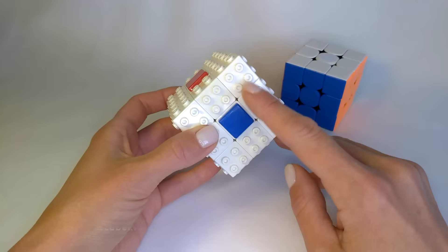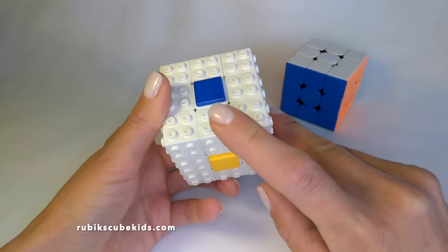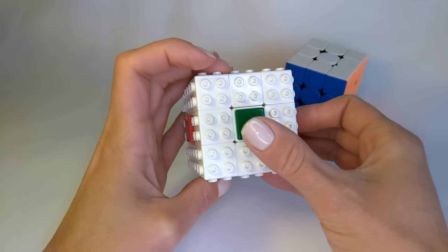The color of the center tells you what color the entire side should be. For example, when the cube is solved, the white side will be here because this side has a white center. It will be a yellow side, blue, red, orange and green.